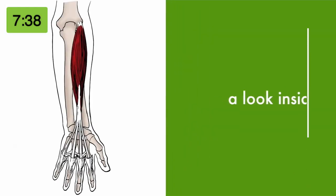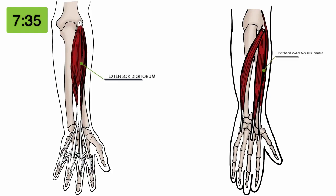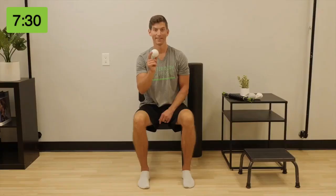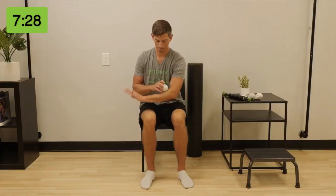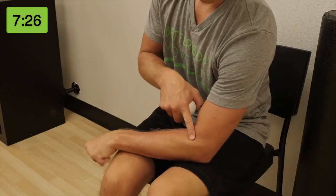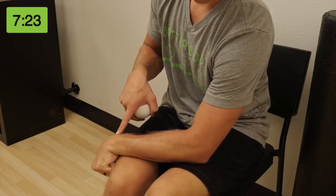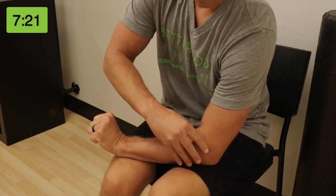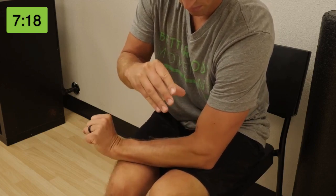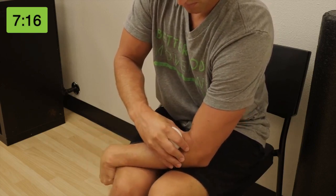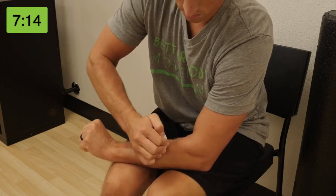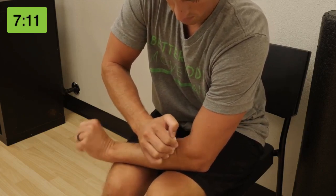Carpal tunnel syndrome is commonly caused by forearm muscles that get overly tight and create compression on the carpals. We'll start by working through the extensor digitorum, extensor carpi radialis longus and brevis, and extensor carpi ulnaris. Start with a lacrosse ball on the upper part of the forearm — when you make a fist and squeeze the knuckles up, the muscles will tighten near the elbow. Press down with the lacrosse ball and flex the wrist, then release returning the wrist to extension.